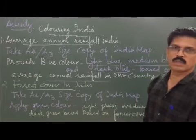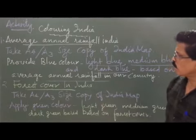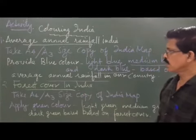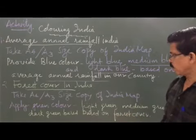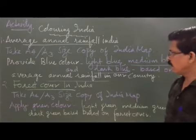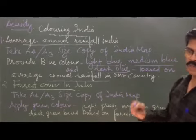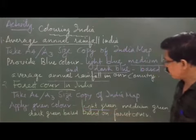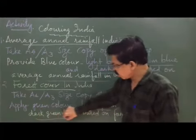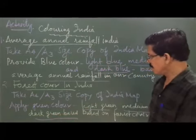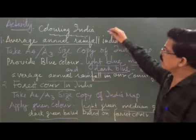Now the second task: take one more India map copy, A4 or A3 size. You have to search the internet and find the forest cover data for different parts of our country. Areas with lower forest cover get light green, areas with medium forest cover get medium green, and areas with more or larger forest area get dark green color.